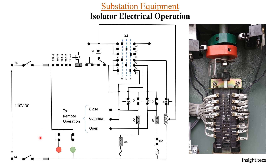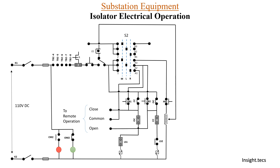Additionally, CM2 and OM2 auxiliary switch contacts are used for the LEDs and are also very important for other purposes — such as taking the status of the isolator for SCADA indication, or for bus bar protection which depends on the position of the isolator (whether open or closed). In those cases, these auxiliary contacts CM2 and OM2 play a major role.